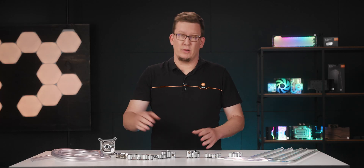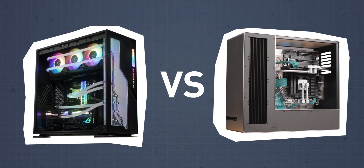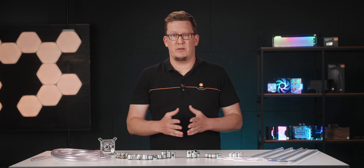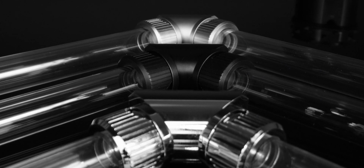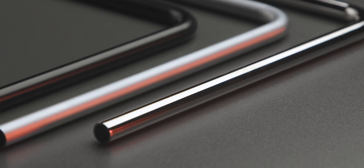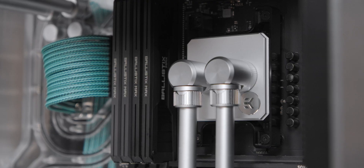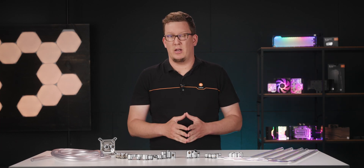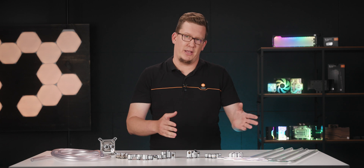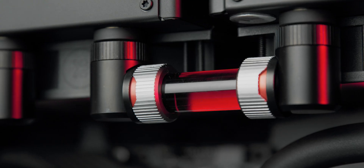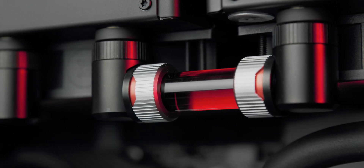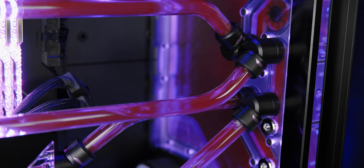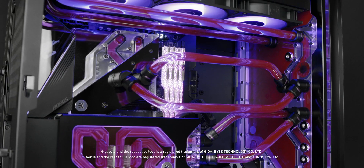So, soft or hard tubing? Hard tubing is usually chosen for its exclusive materials such as acrylic, brass, copper, or carbon fiber, and it brings clean, well-organized aesthetics. You can also choose between clear and color tubing, available with both soft and hard tubing. However, the option of clear tubing is much more popular as it allows the user to display their colorful coolants that can add some additional flair to the PC.